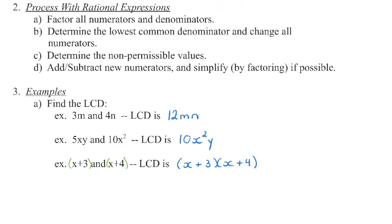So let's say that my two denominators are 3m and 4n. What is the smallest number that 3 and 4 can divide into evenly? It's going to be 12, and then we're basically going to squish these monomials together, so we're going to have an m times an n.